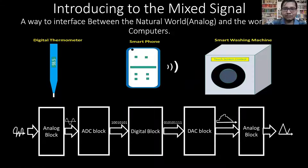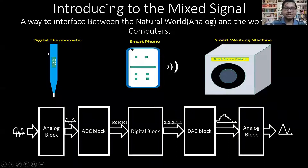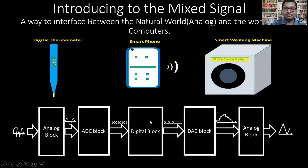Introducing you all to the mixed signal — a way to interface between the natural world (analog) and the digital world of computers. We have a few examples in our daily life, like the digital thermometer, smartphone, and smart washing machine, which we use every day. These all have analog as well as digital blocks. Here is the simple block diagram of mixed signal.